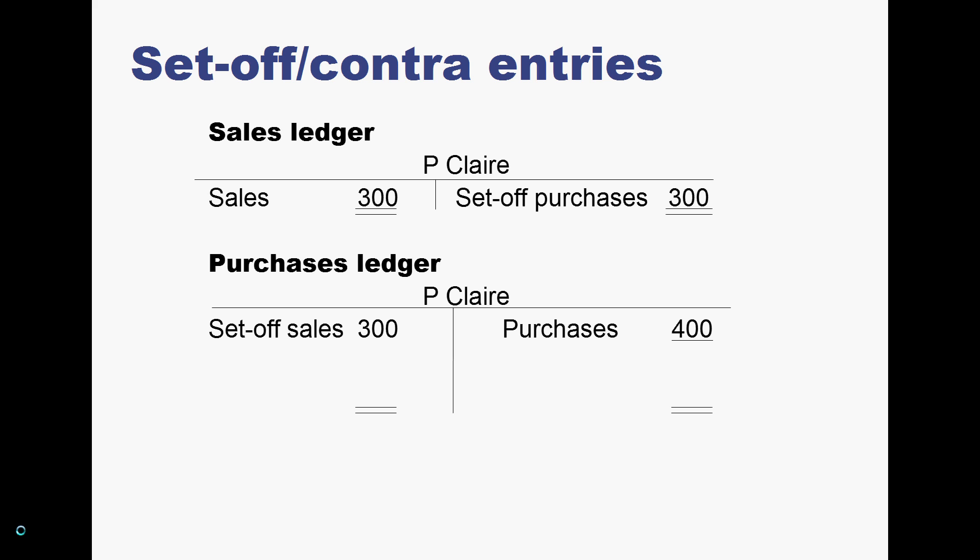What is the effect on the ledger? The sales ledger is closed off and balanced, so P.Claire does not owe us any money. What's the effect on the purchase ledger? As you can see, it needs balancing off. We're going to record the only payment that needs to be made. We owe P.Claire £400, with the contra of the £300 offsetting, so the difference is only £100, and that we can pay by cash book — we've paid P.Claire by cheque.